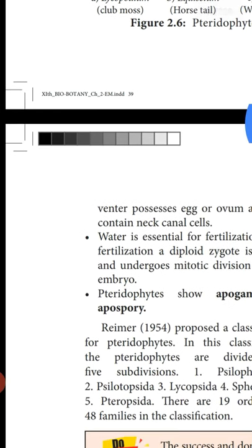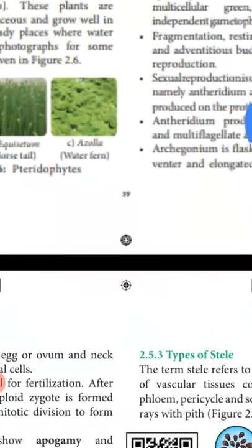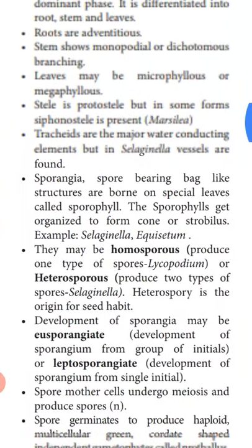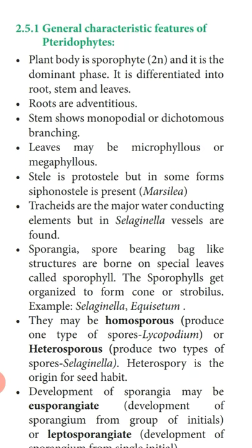Now we will study the general characteristics of pteridophytes. First, the plant body is a sporophyte, and it is the dominant phase. The plant body is differentiated into root, stem, and leaves — confirming that they are the first true land plants.